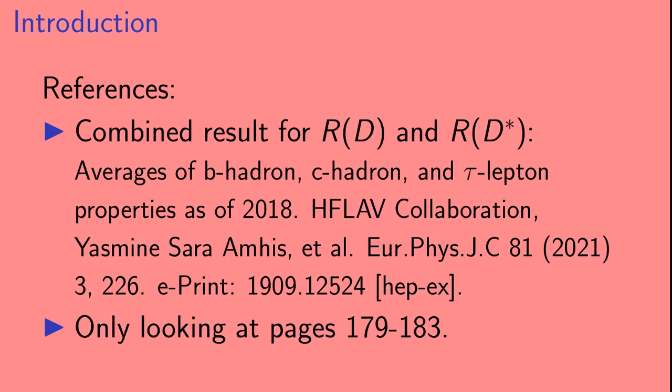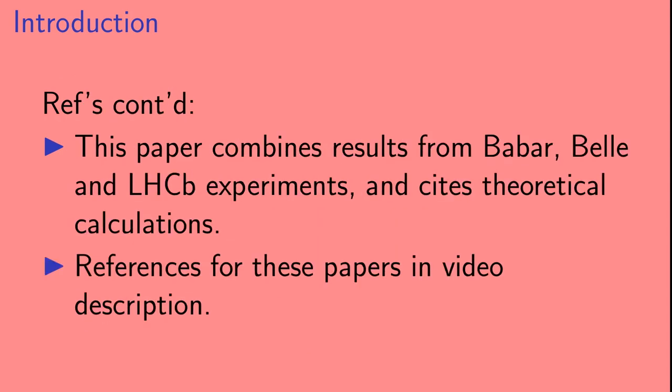Okay, so let's mention a few references. The combined result for R(D) and R(D*) that will be given at the end of the video is being taken from a paper from the Heavy Flavor Averaging Group. And this paper is a 494 page behemoth, and we're only going to be looking at pages 179 through 183. That paper from the Heavy Flavor Averaging Group combines results from the Babar, Belle, and LHCb experiments, and it also cites theoretical calculations. The references for those papers you can find in the video description below.